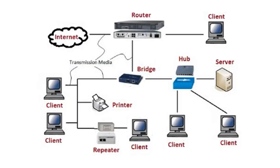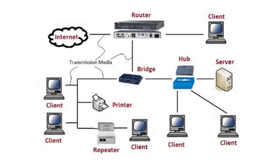A computer network is a set of computers sharing resources located on network nodes. The computers use common communication protocols over digital interconnections to communicate with each other. A network consists of two or more computers that are linked in order to share resources such as printers and other networking devices, exchange files, or allow electronic communication.